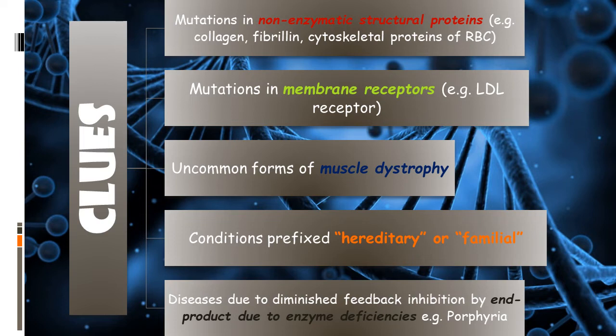If there is any mutation causing a problem with collagen, fibrillin, or cytoskeletal proteins of RBC, that comes under autosomal dominant disorder. The second clue is mutation in membrane receptors, for example the low density lipoprotein receptor. Third are conditions prefixed with 'hereditary' or 'familial,' and finally diseases due to diminished feedback inhibition by end product due to enzyme deficiencies, most commonly porphyria.